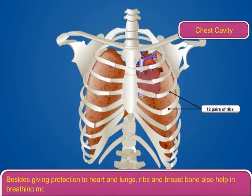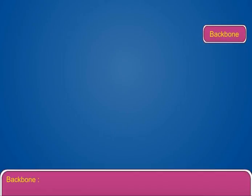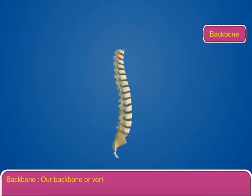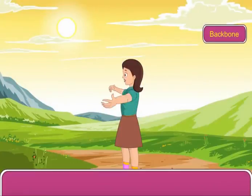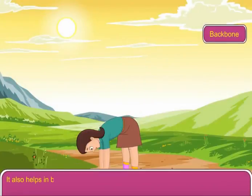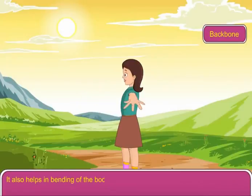Our backbone, or vertebral column, is made up of 33 vertebrae. There is a cavity called the neural canal in the vertebral column that protects the spinal cord. It also helps in bending of the body forward and backward.